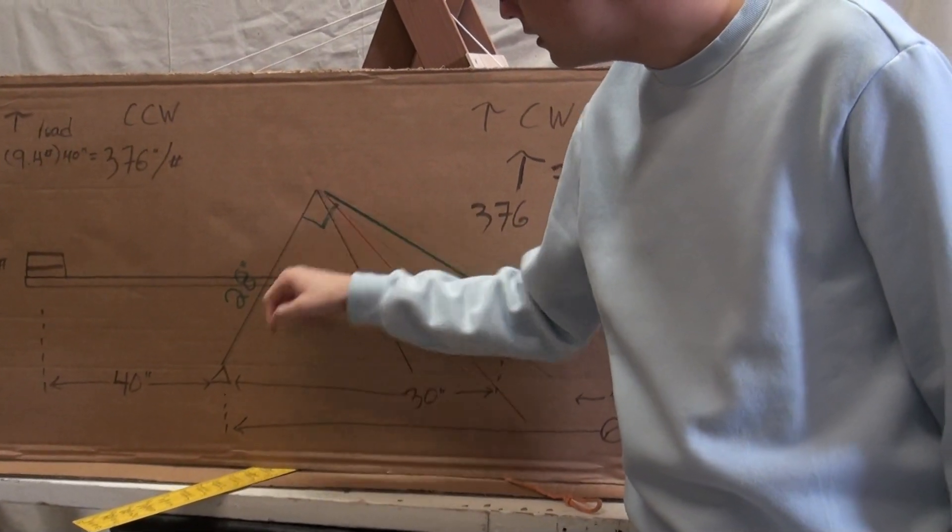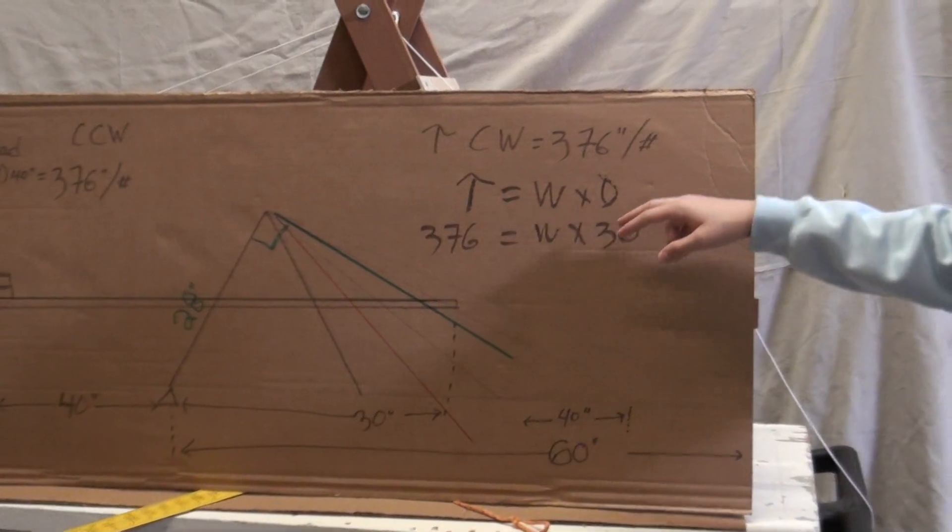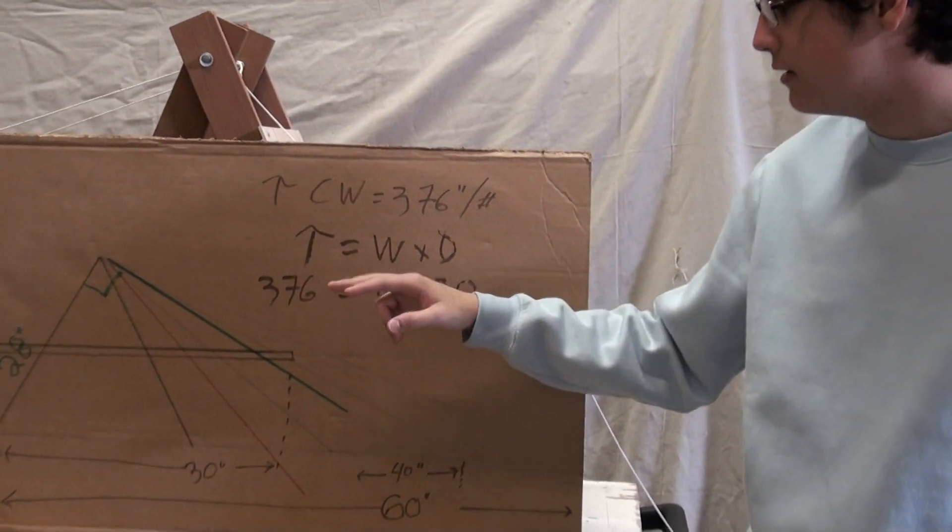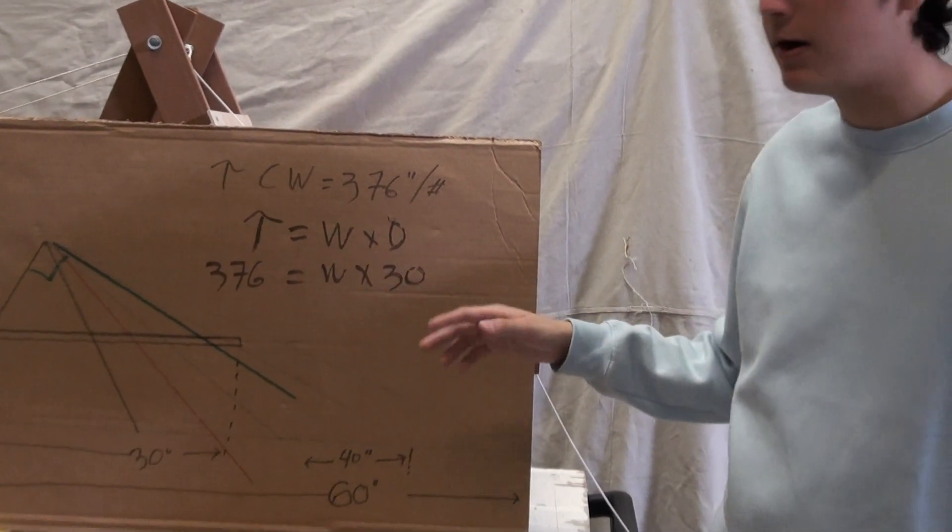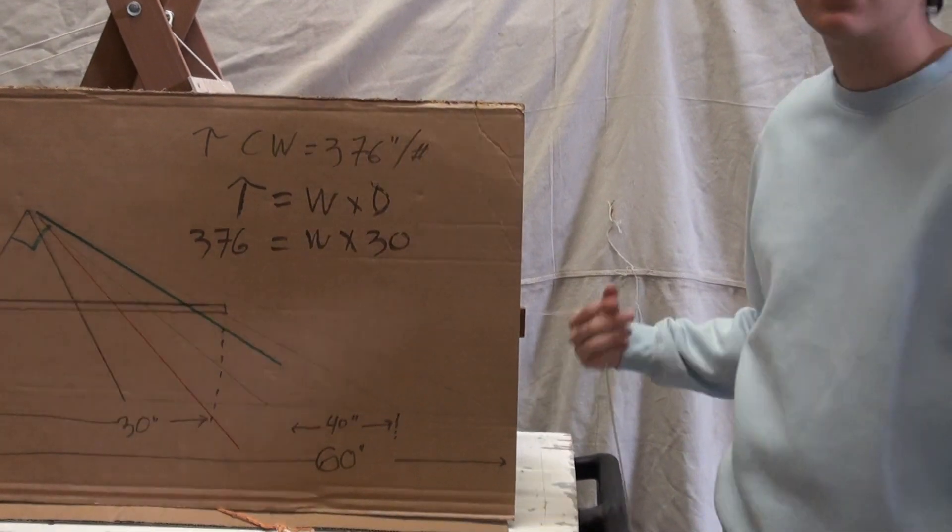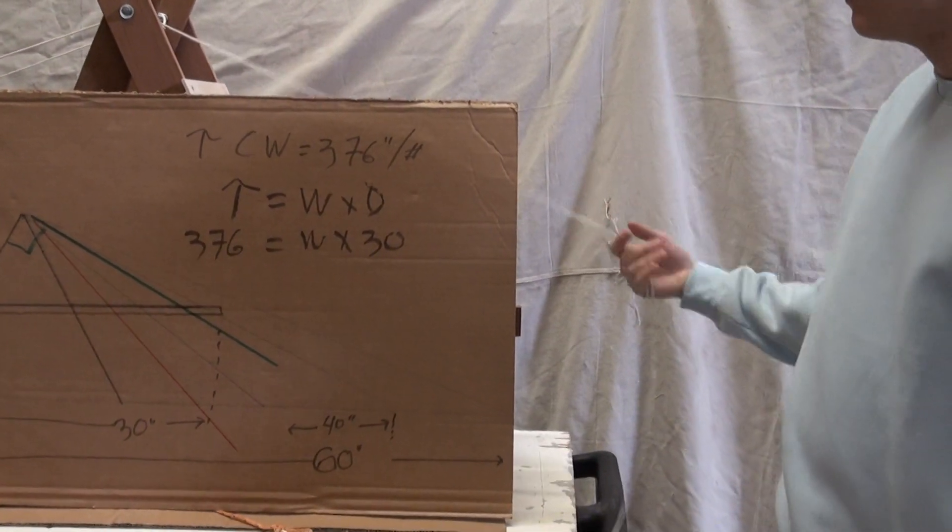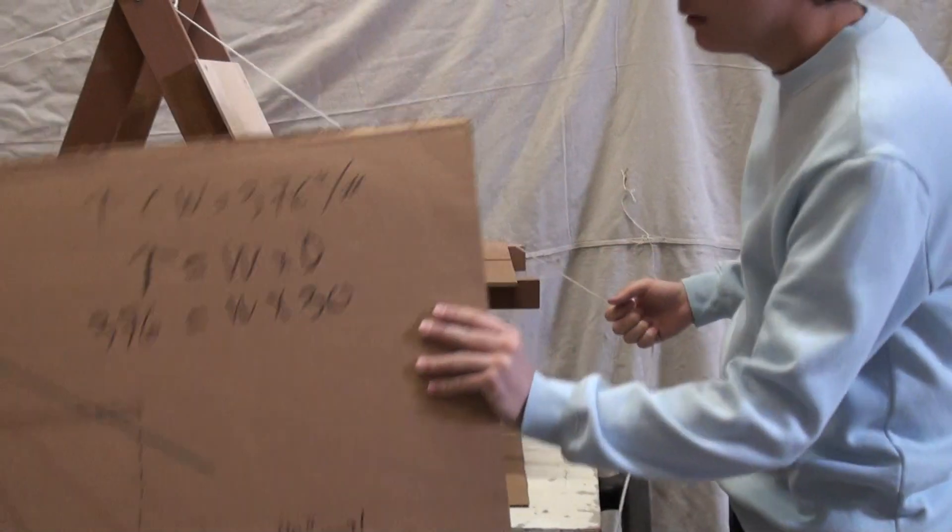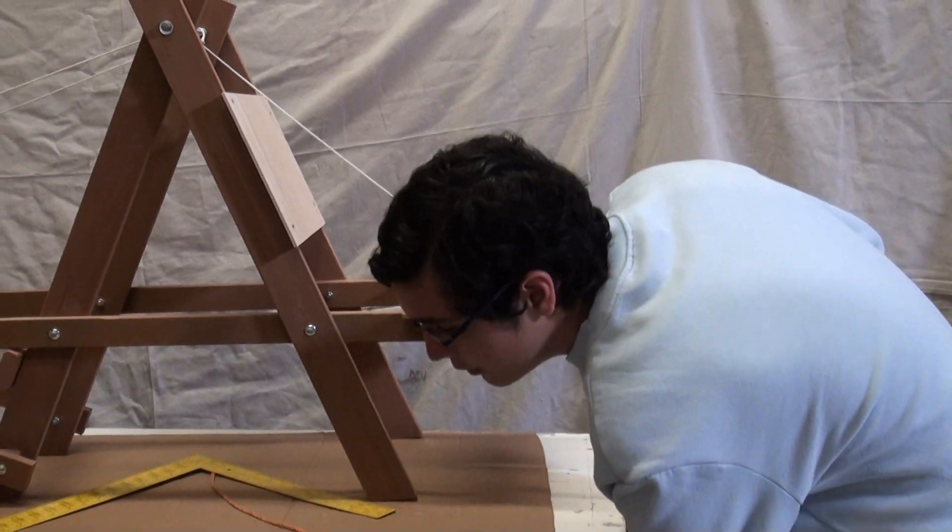That line right there. 28 inches. So we take 376, divide it by 28 inches. We get about 13.4 pounds. So you need 13.4 pounds muscle to counteract the two brick load.